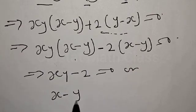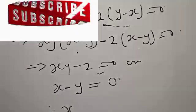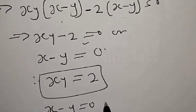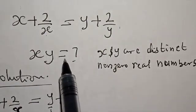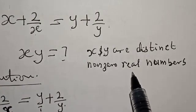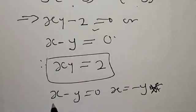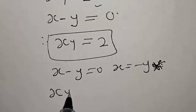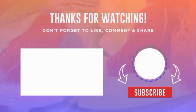Therefore xy minus 2 equals zero, or x minus y equals zero. From the first factor xy equals 2. From the second, x equals y. But remember the question states x and y are distinct non-zero real numbers, so x minus y equals zero does not satisfy the given equation. Therefore our final answer is xy equals 2.